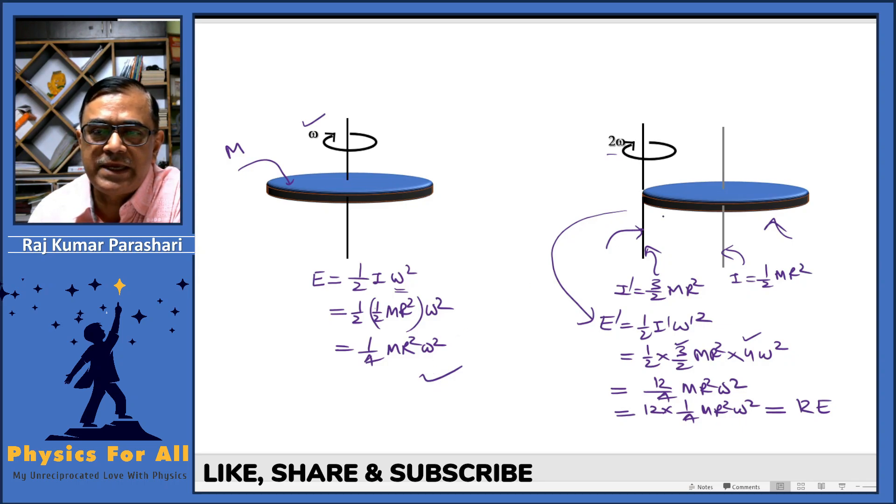Thus in the second case, the rotational kinetic energy about the new axis is 12E. Thank you.